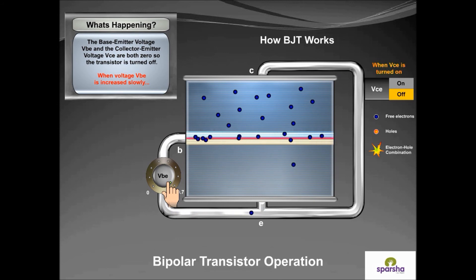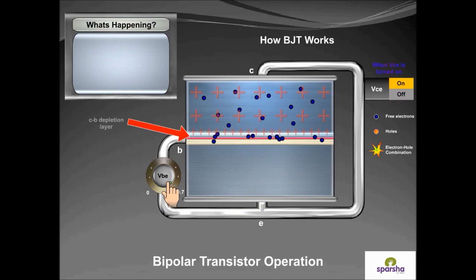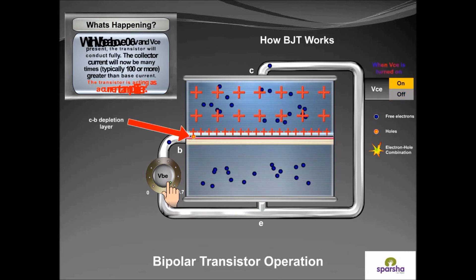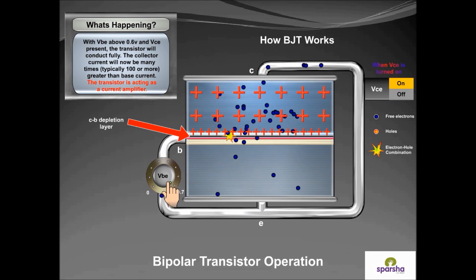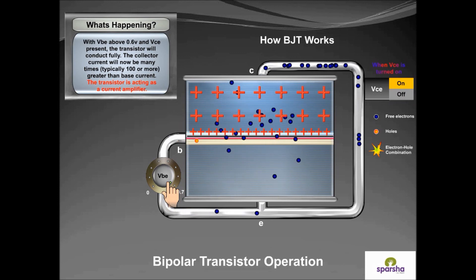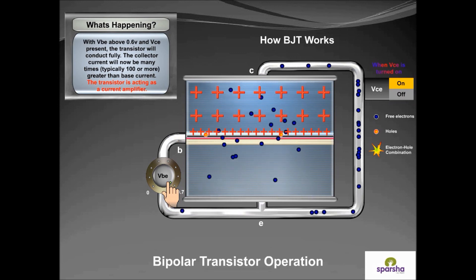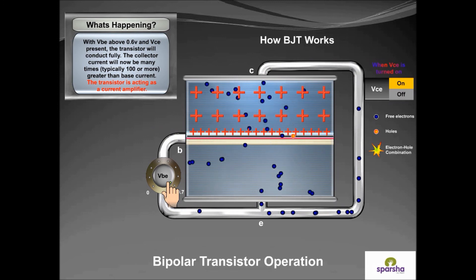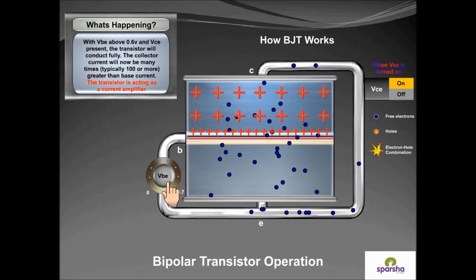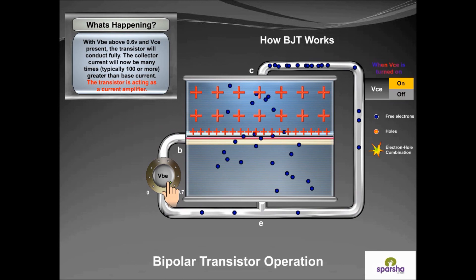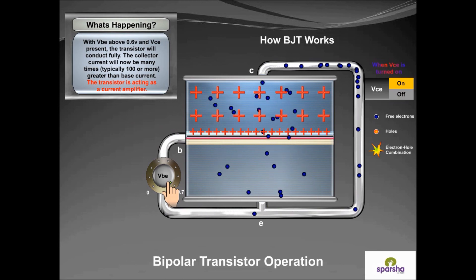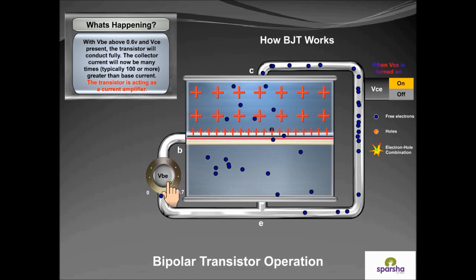There is no collector current as VCE is off. When VCE is turned on, with VBE above 0.6 volts and VCE present, the transistor will conduct fully. The collector current will now be more than 100 times greater than base current. The transistor is acting as a current amplifier.